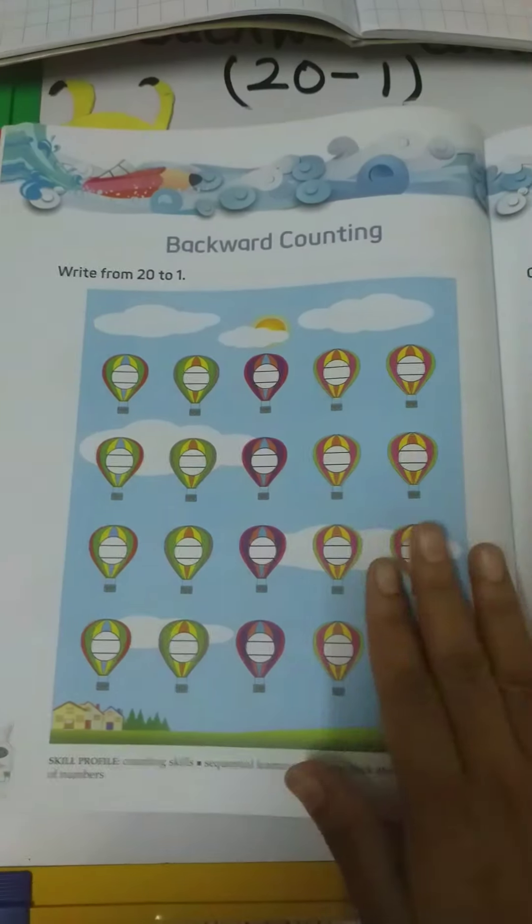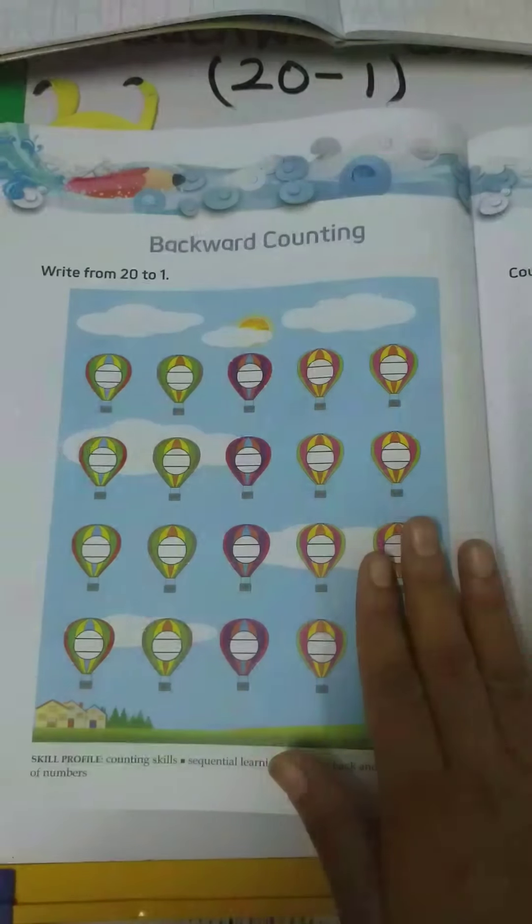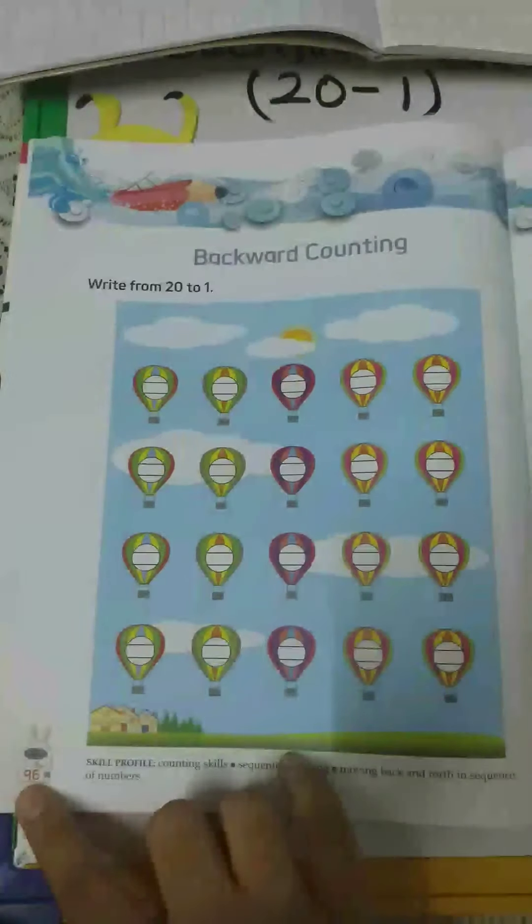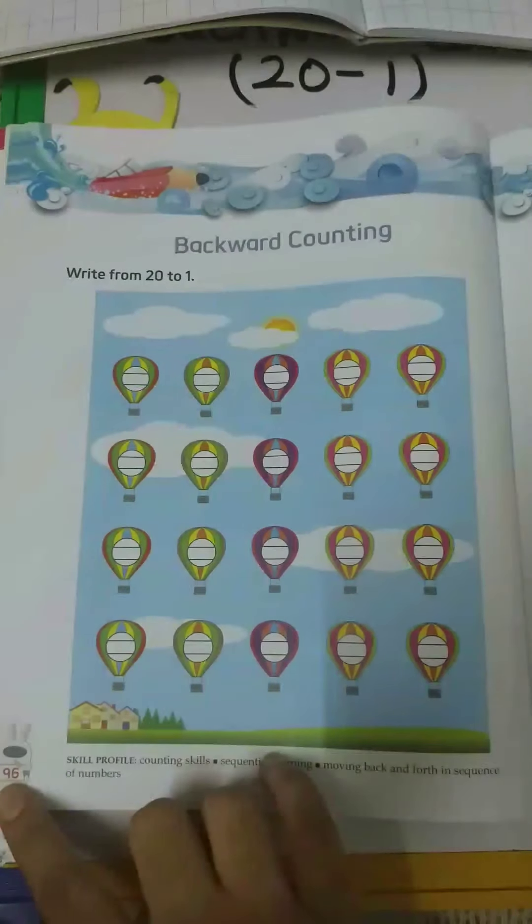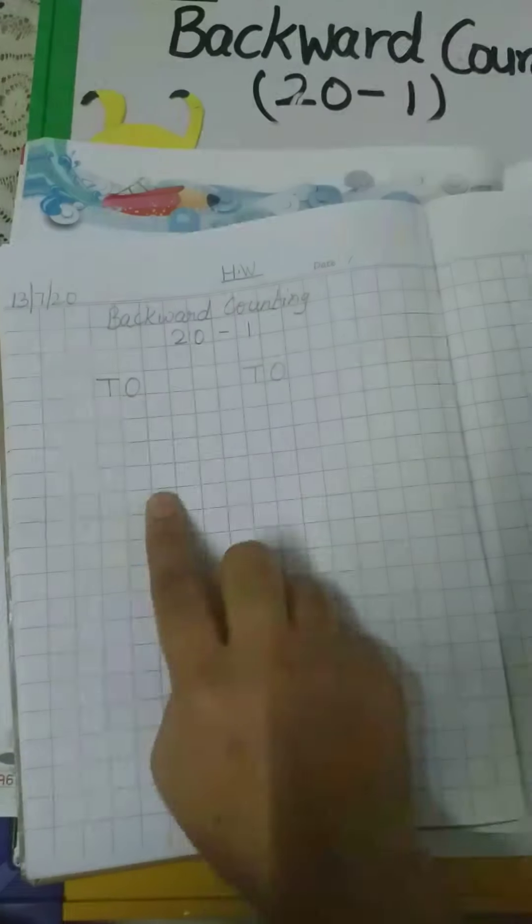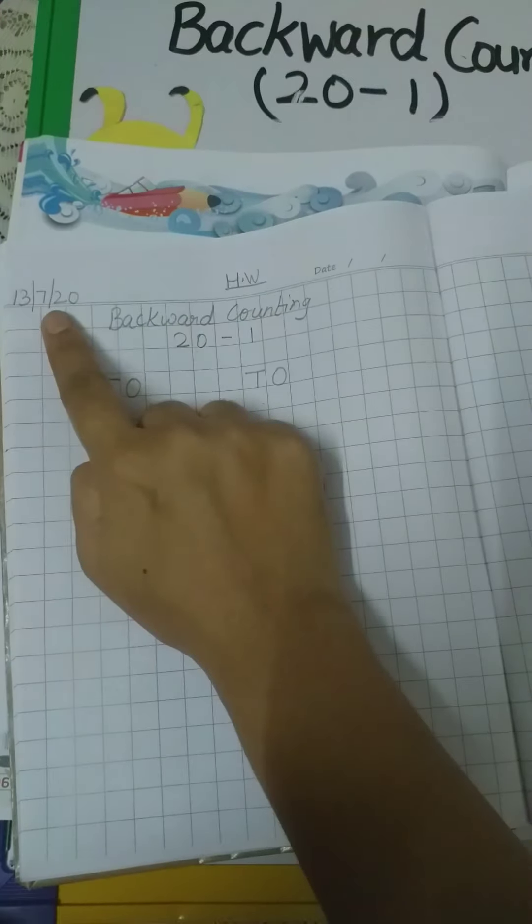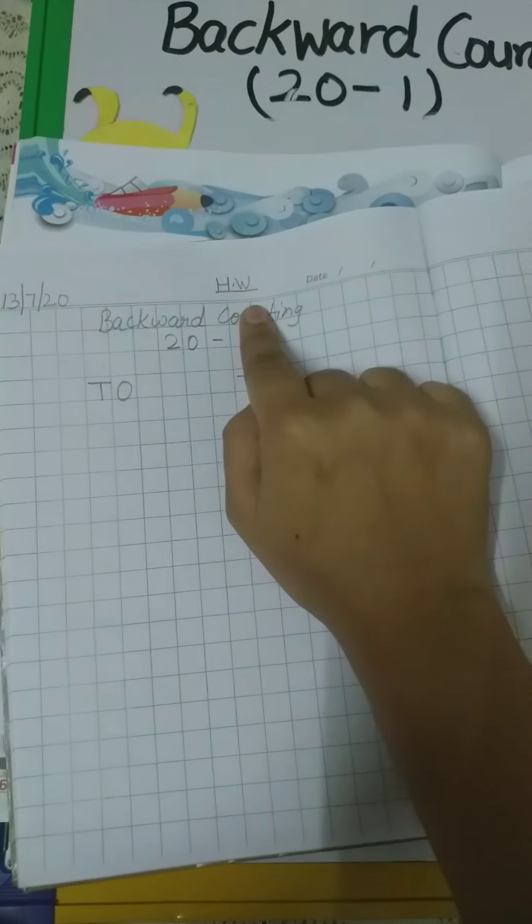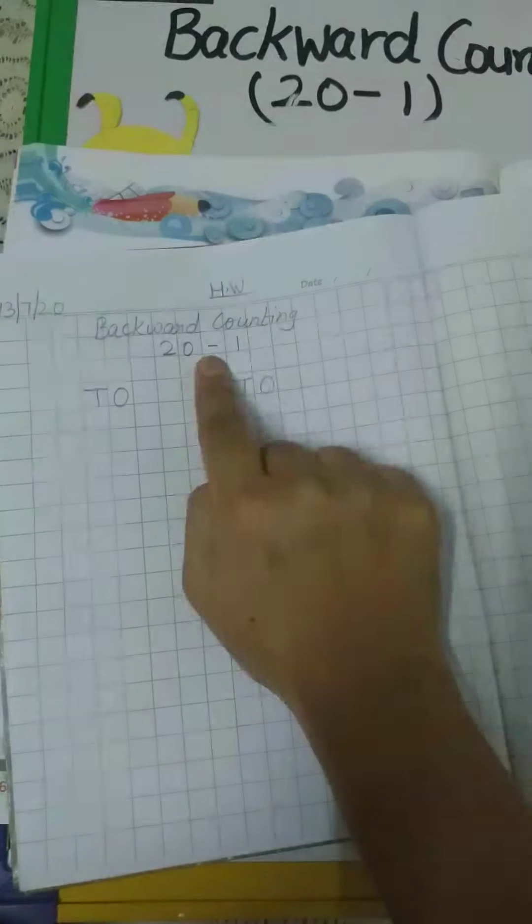So children, you have to do this work, backward counting from 20 to 1, in your book. There is a page number 96, and you have to do in your notebook also. Like this, you have to write here date, homework, and backward counting 20 to 1.